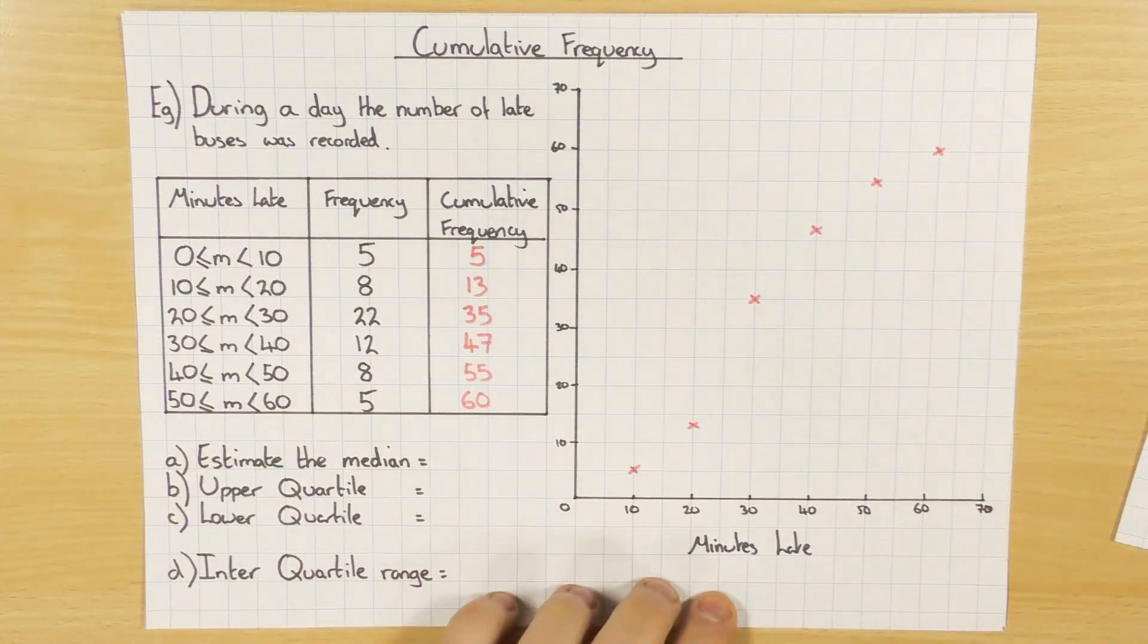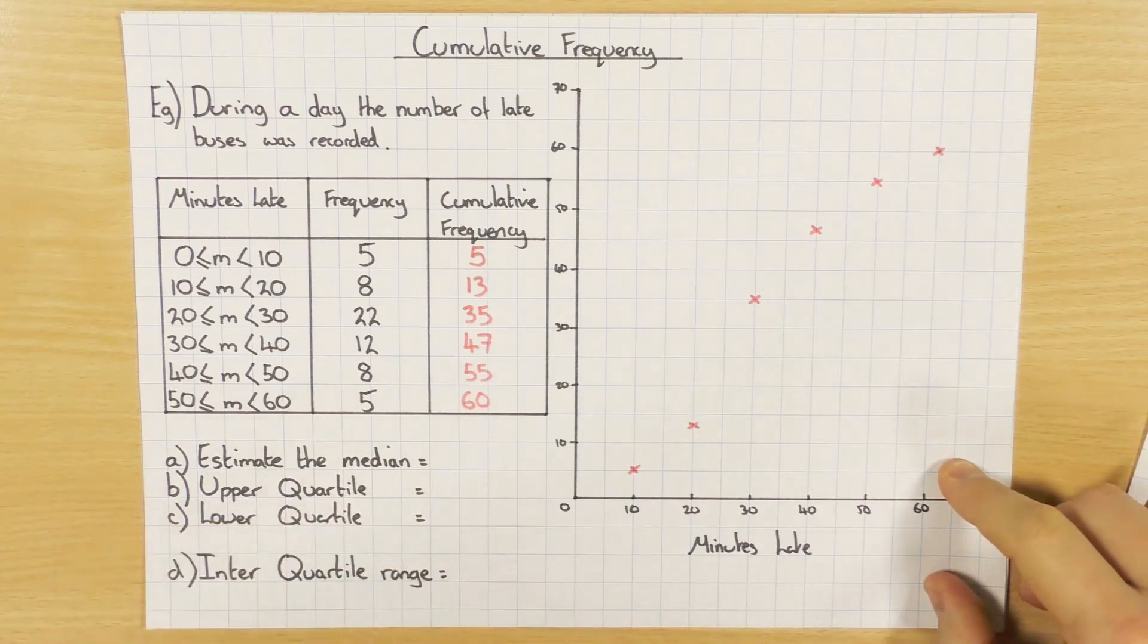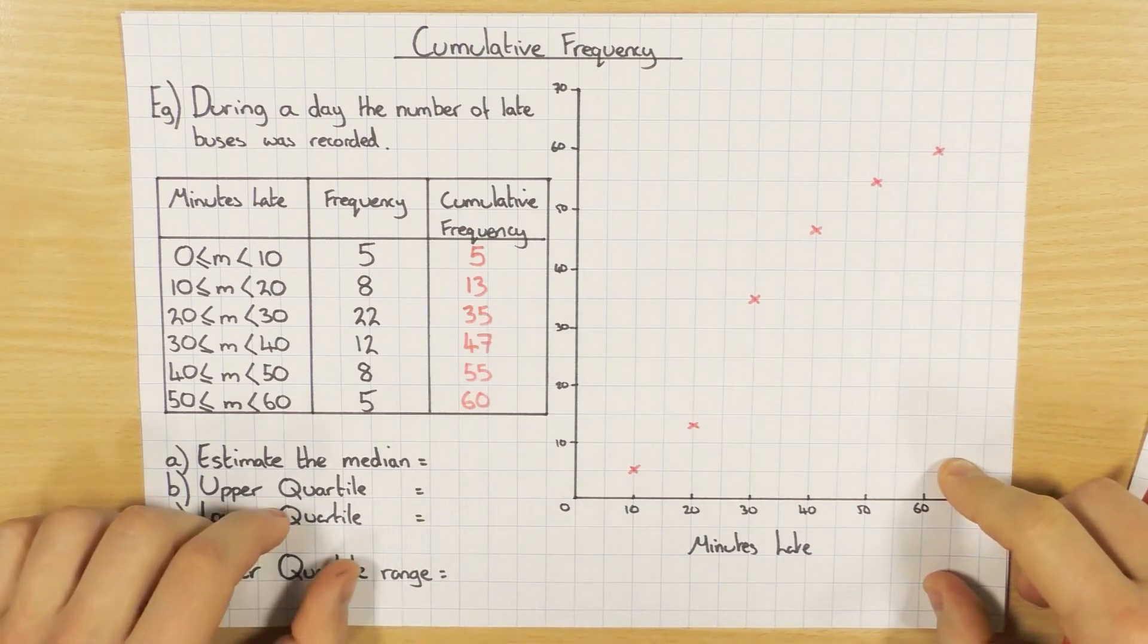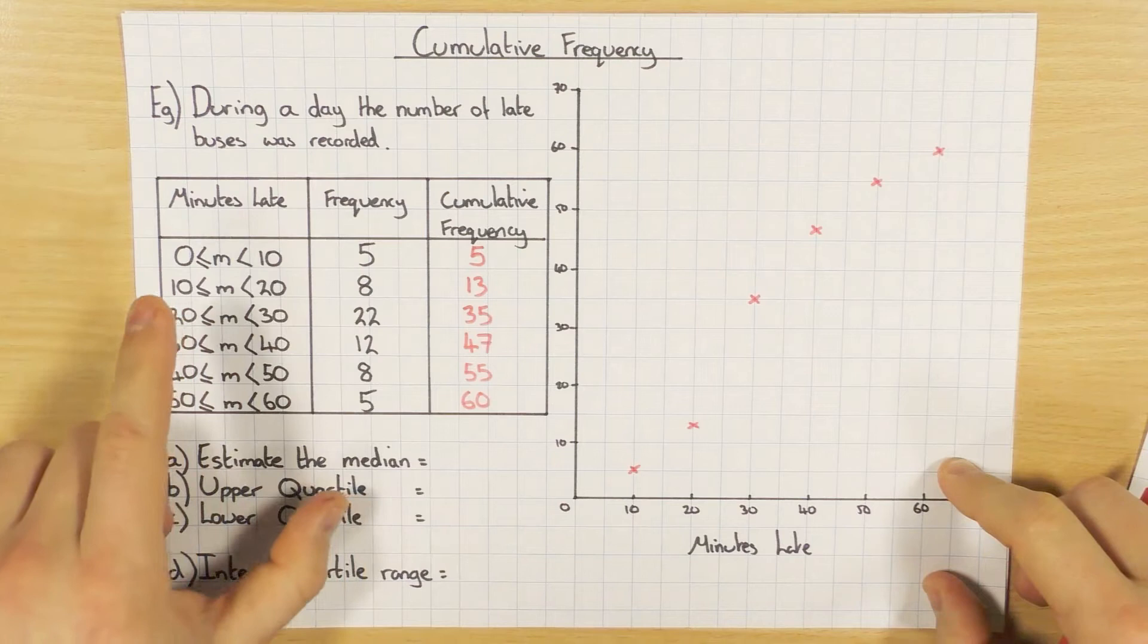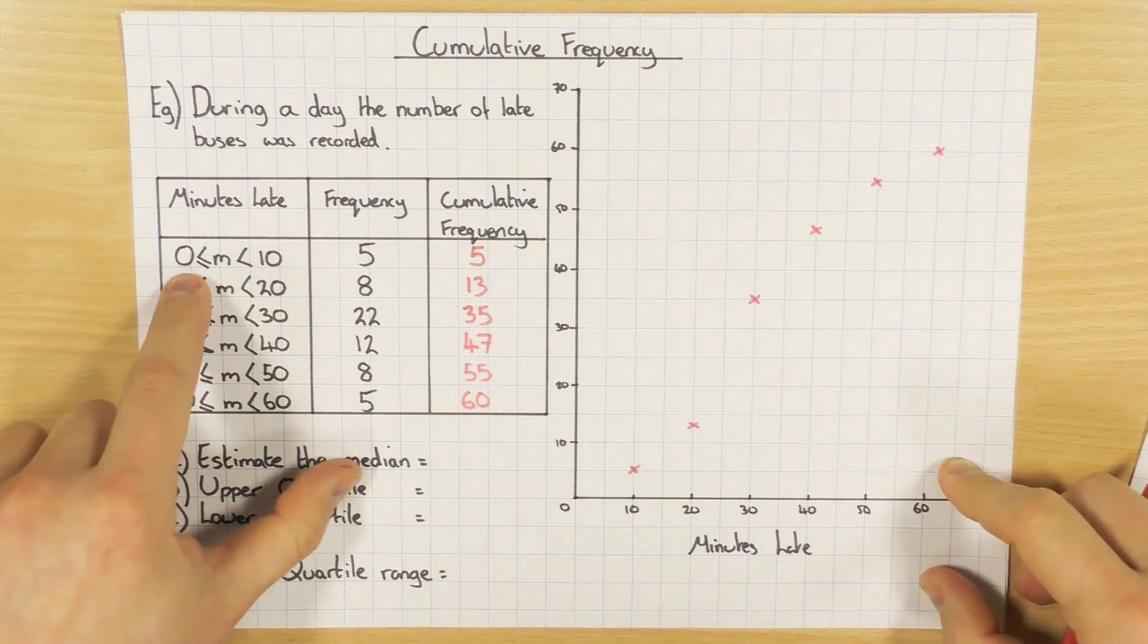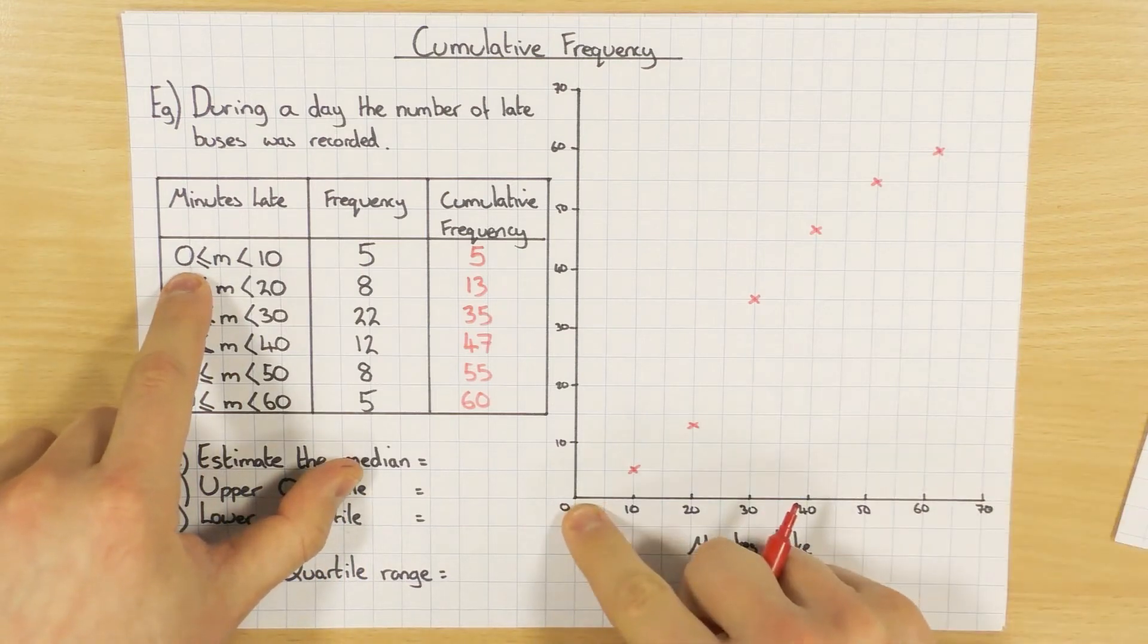So once you've plotted your points, you then need to draw a nice smooth curve. So do this in pencil in case you mess it up.